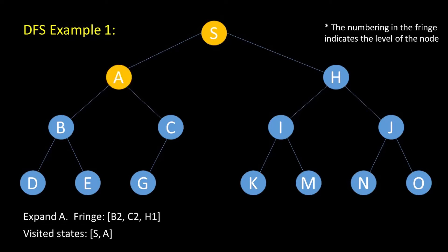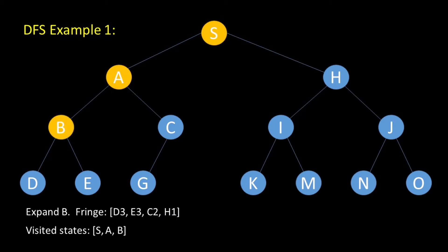We visit A. Is A the goal node? No. So we expand A to get B and C. We visit B. Is B the goal node? No. So we expand B to get D and E. We choose D. We visit D. Is D the goal node? No. So we expand D. When we expand D, we find that D is the leaf node. So we backtrack to the previous node to go to the next node which is E.